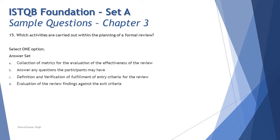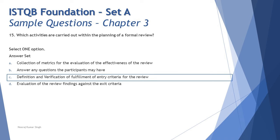Option D — evaluation of review findings against the exit criteria — exit criteria is measured once everything is done, at the last stage of the formal review process, which is fixing and reporting. That's also not part of the planning phase. So the right answer is C: definition and verification of fulfillment of entry criteria for the review is an activity performed during the planning phase.